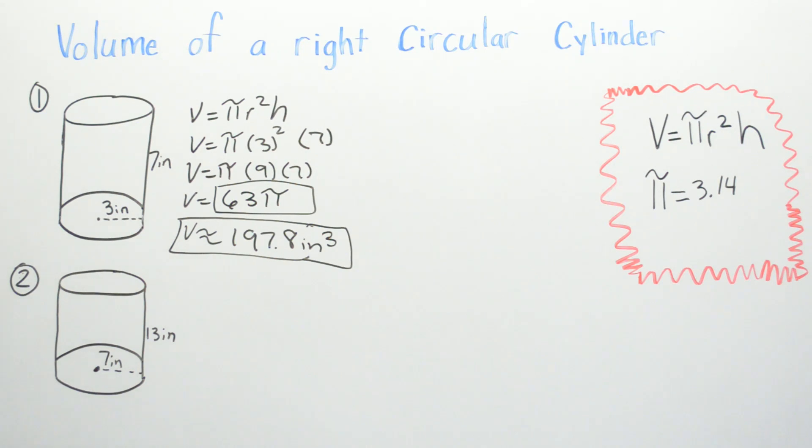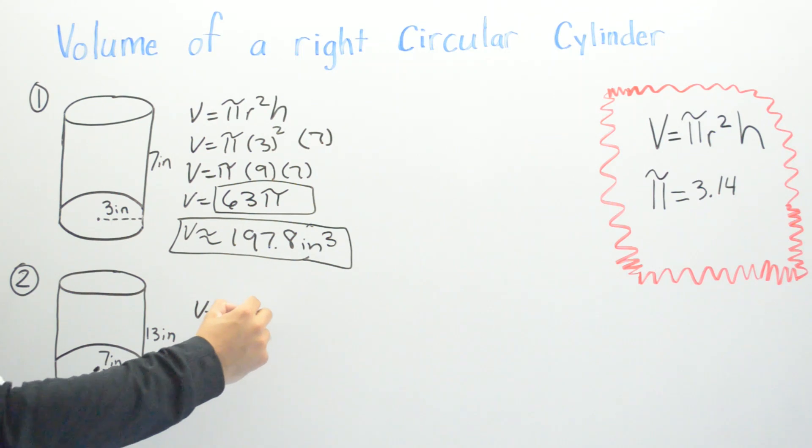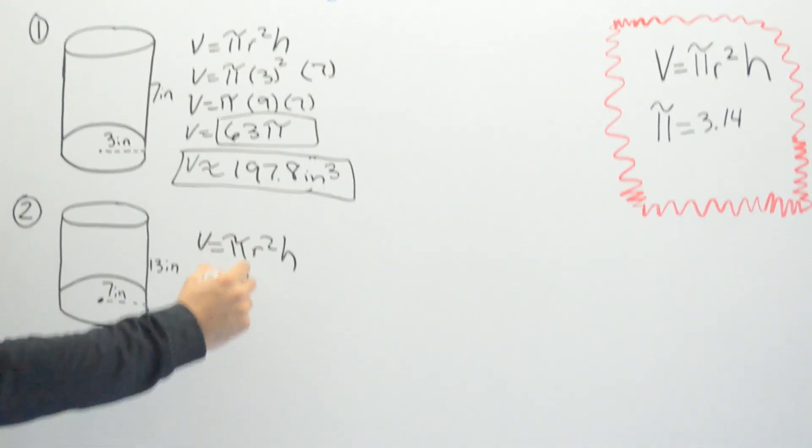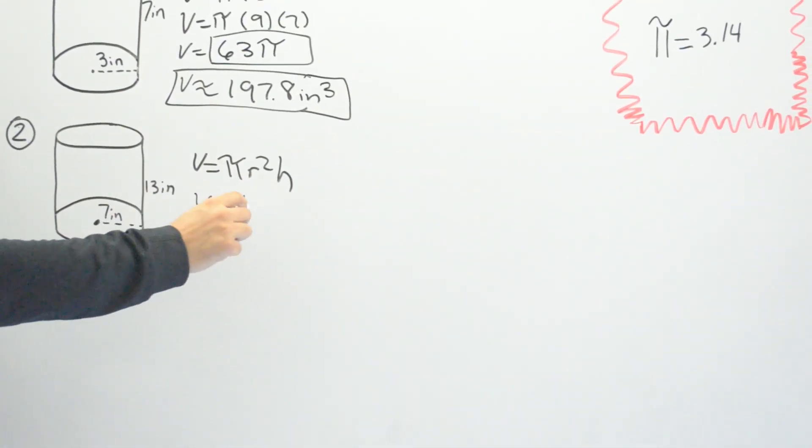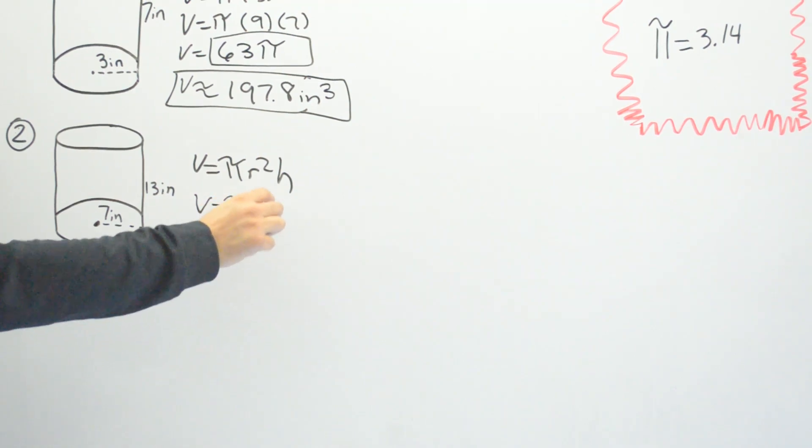For number two, do the same thing. I go ahead and put volume equals pi r squared times my height. V equals pi. What is my radius? My radius here is seven. So I'm gonna go ahead, seven to second power, and what do I have as height? It's 13. Multiply that by 13.